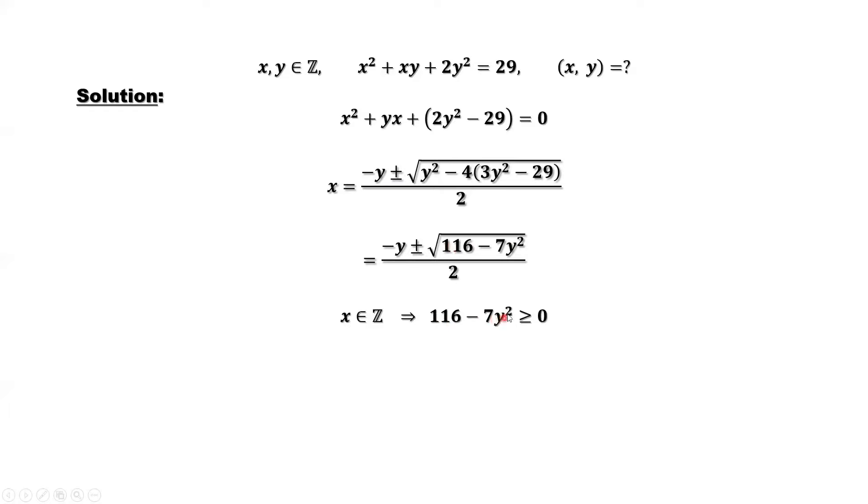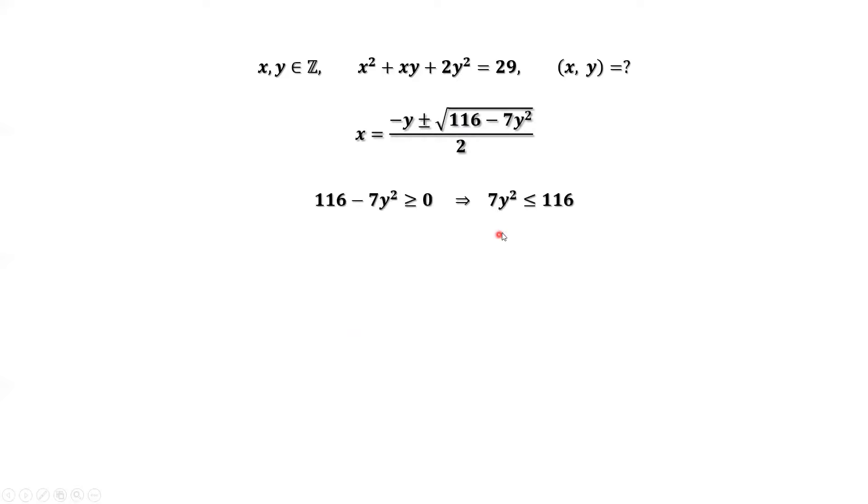116 - 7y² should be greater than or equal to 0. Simplify this inequality. We have 7y² ≤ 116. Continue to simplify. The absolute value of y ≤ √(116/7). We can increase the inside part up to 175.